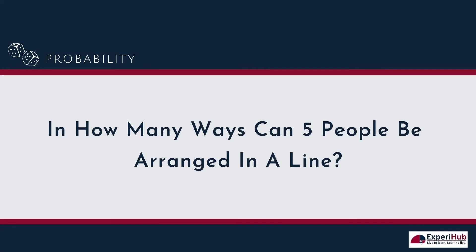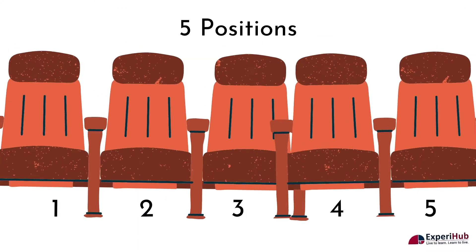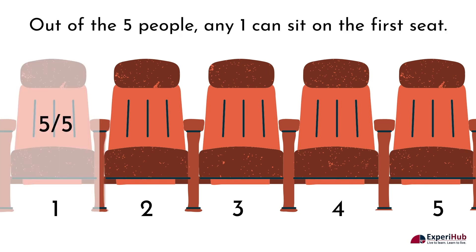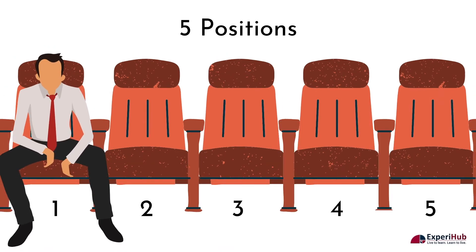In how many ways can five people be arranged in a line? If we have five seats, we have five different options for who can sit in the first seat. If one person is already seated in position one, there are four people left, so out of the five options we had at the beginning, only four people can sit in the second seat.